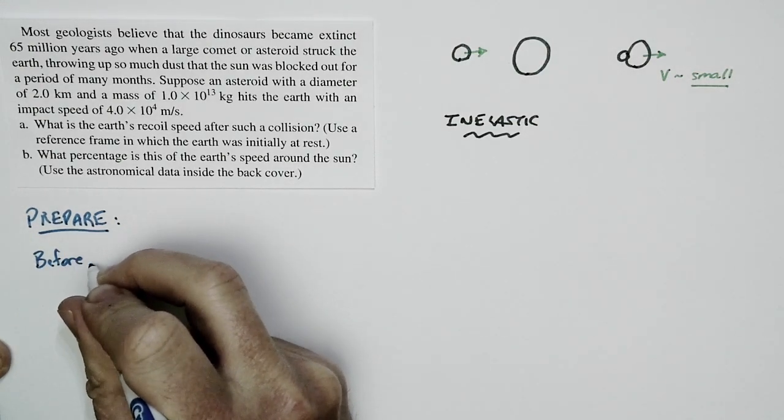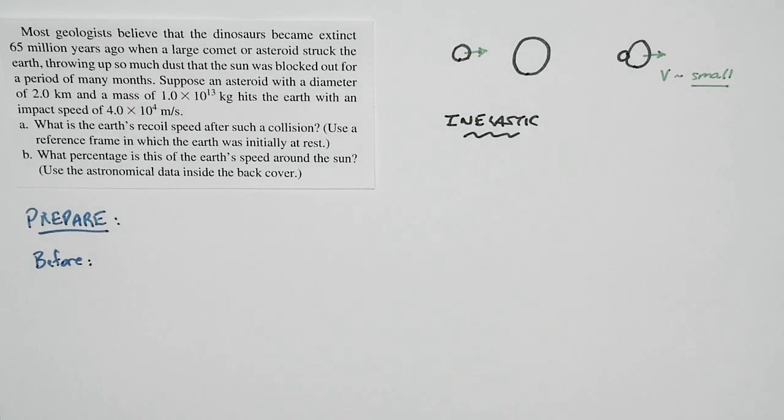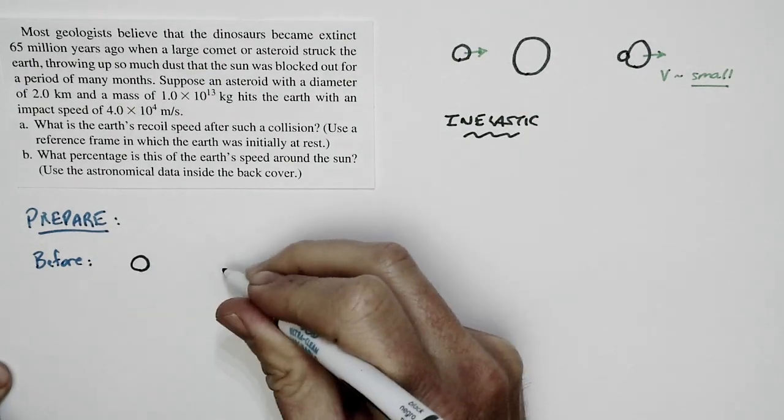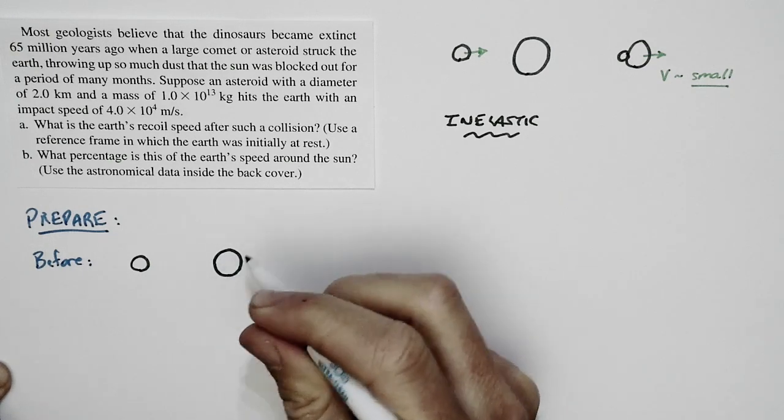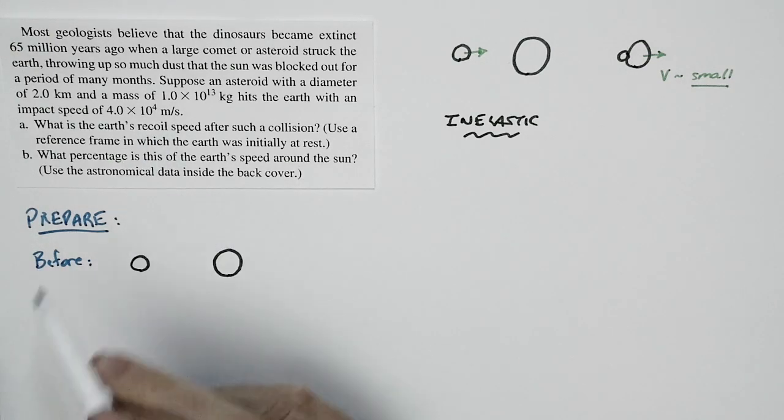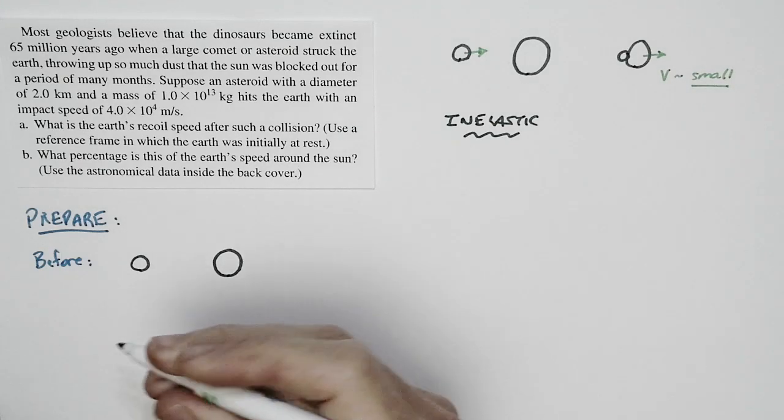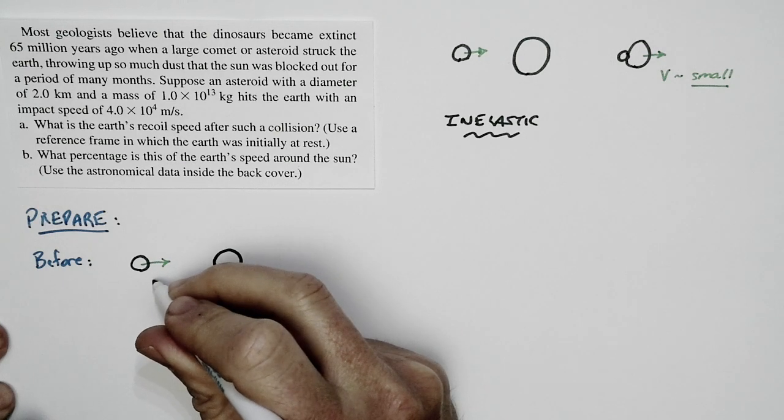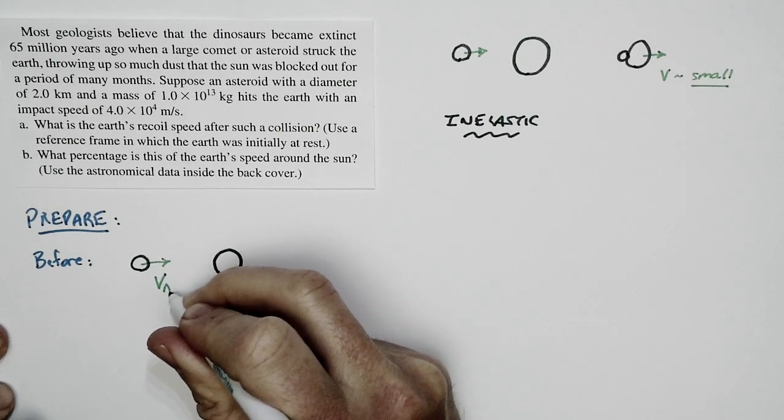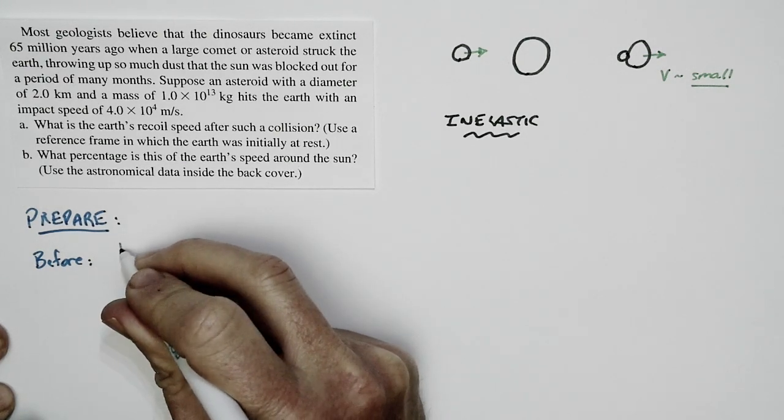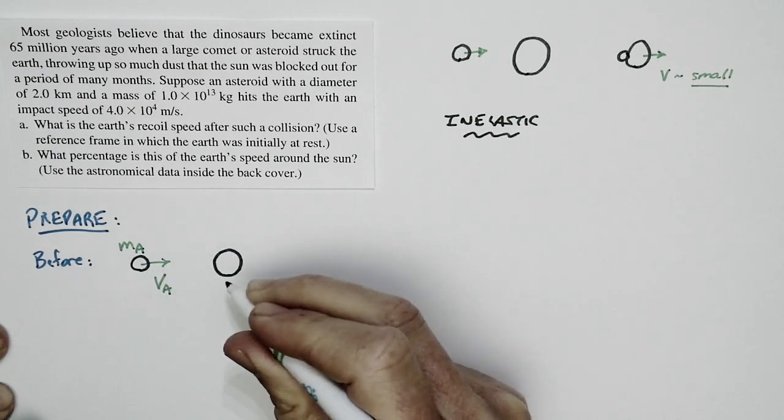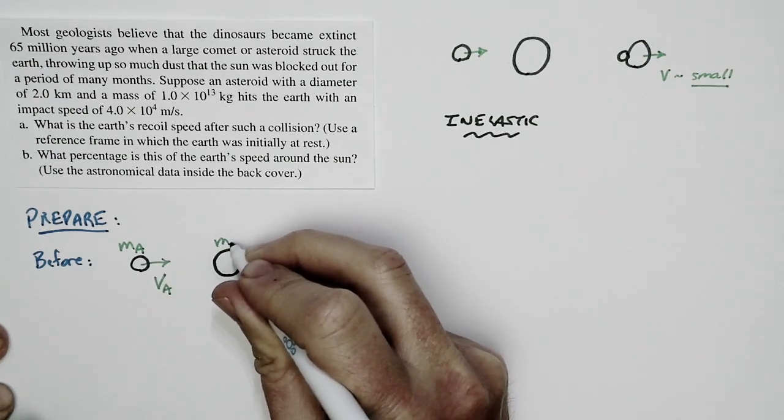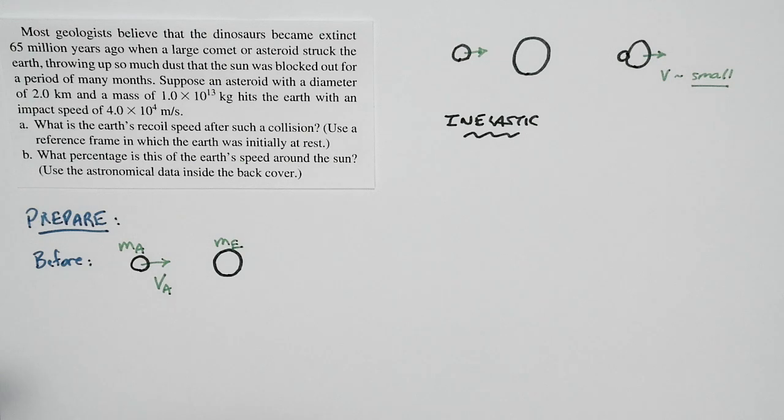Before the collision, we have just the asteroid moving at a very high speed. And the speed given in the problem here, 4 times 10 to the 4th meters per second, that's 40 kilometers per second. That's a very high speed. So we have an initial speed, but for now I'm just going to call that V sub A. That's the speed of the asteroid. And the mass of the asteroid, M sub A, hits the Earth, mass M sub E. That's my before picture.